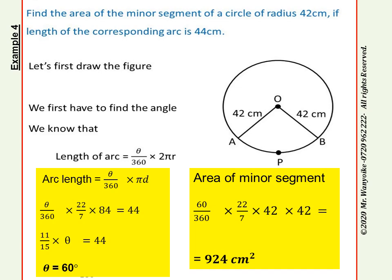We know that the length of an arc will be given by theta over 360 times pi D or times 2 pi R. To get the length of the arc, we use the formula theta over 360 times pi D. That gives us theta over 360 times 22 over 7 times 84, because we need the diameter. The radius was given as 42, so the diameter is 84. That equals 44. When you simplify, you find that 11 over 15 theta equals 44, and your theta is 60 degrees.